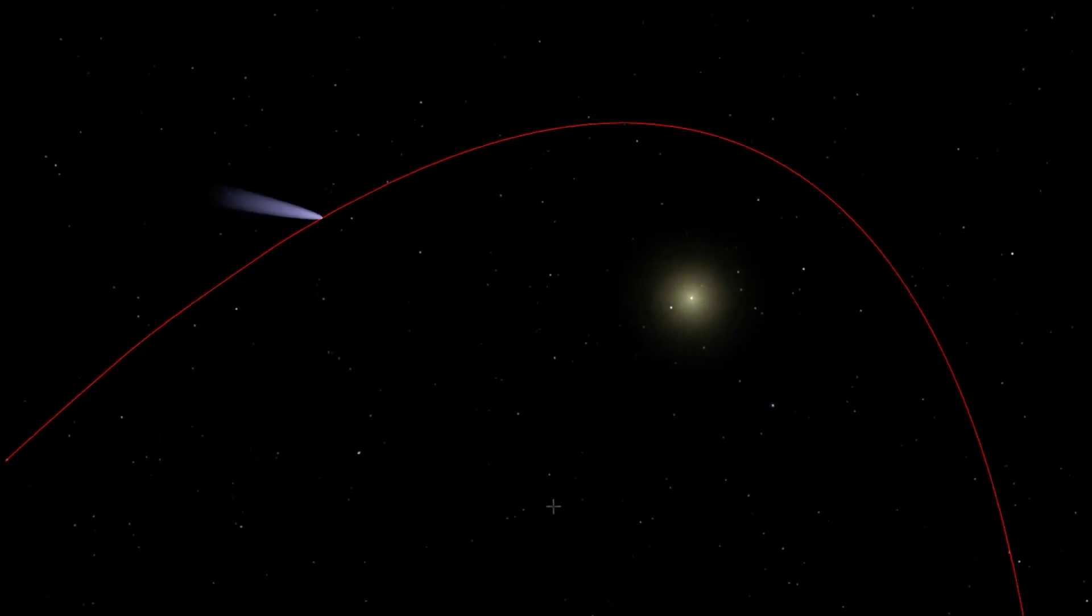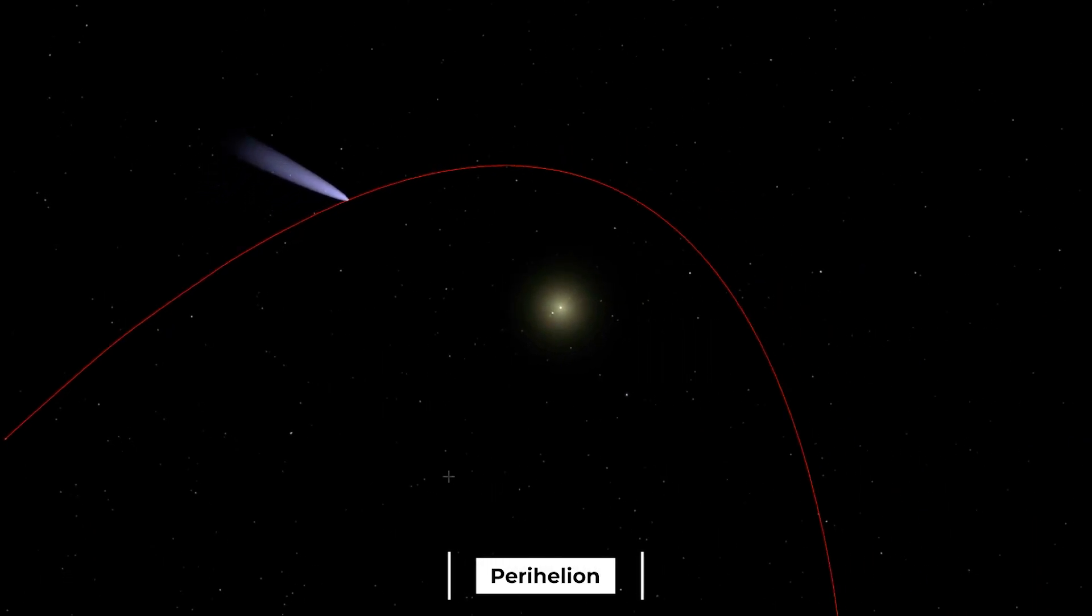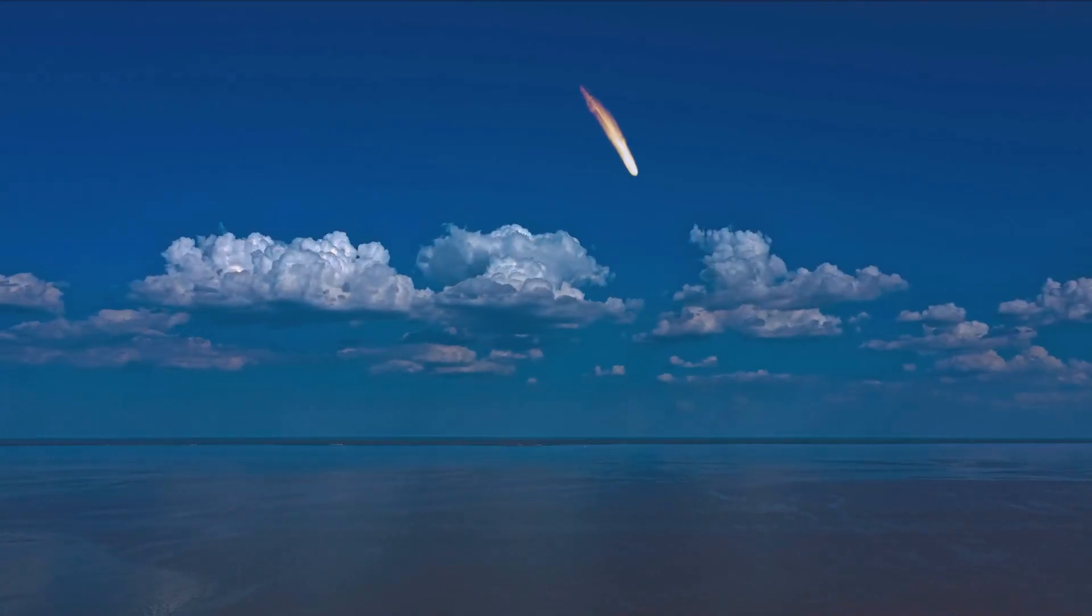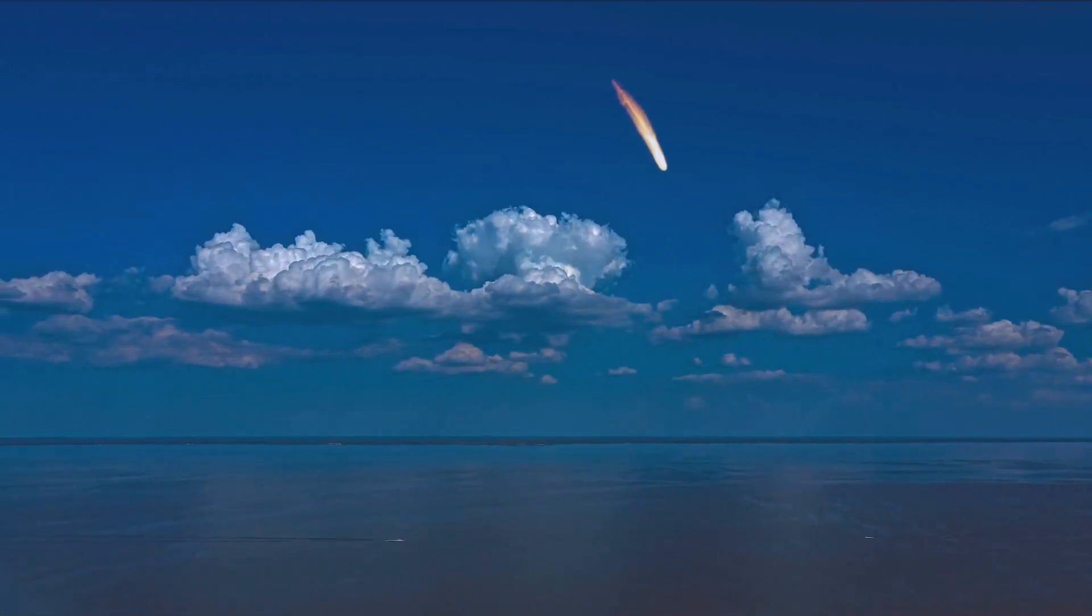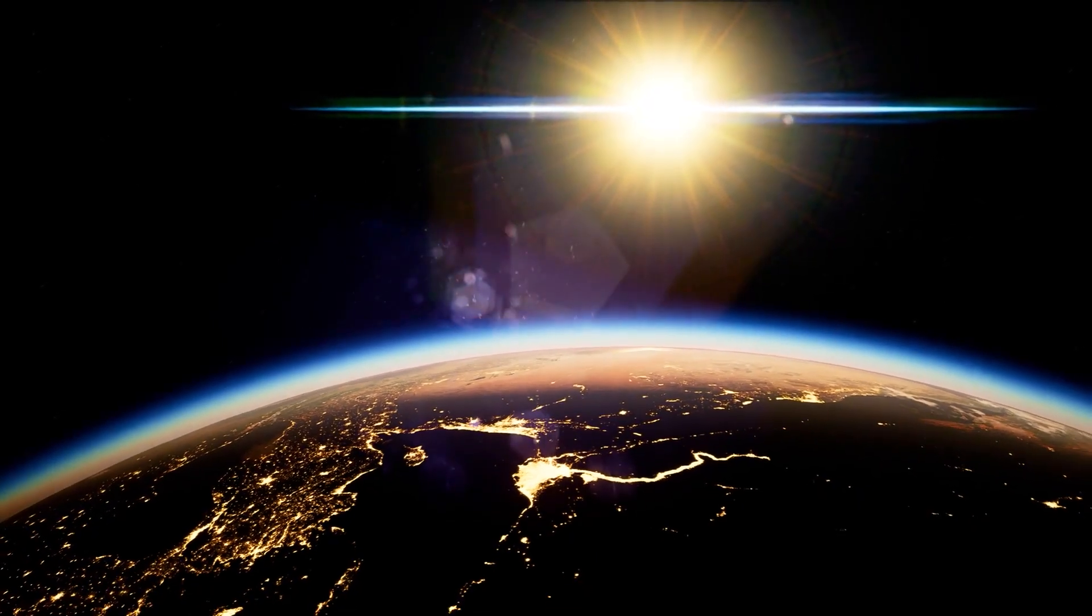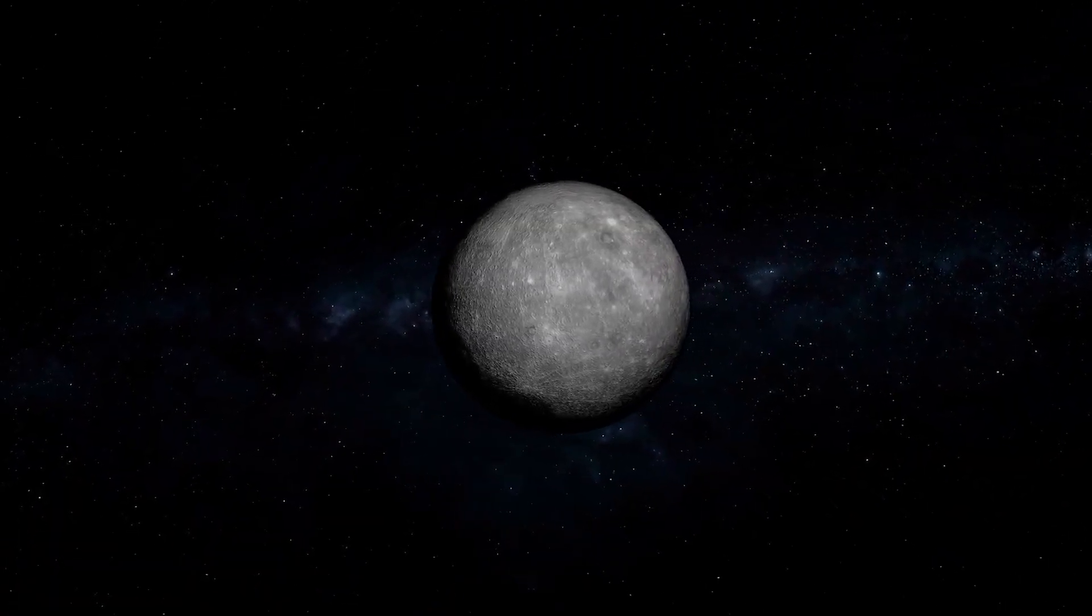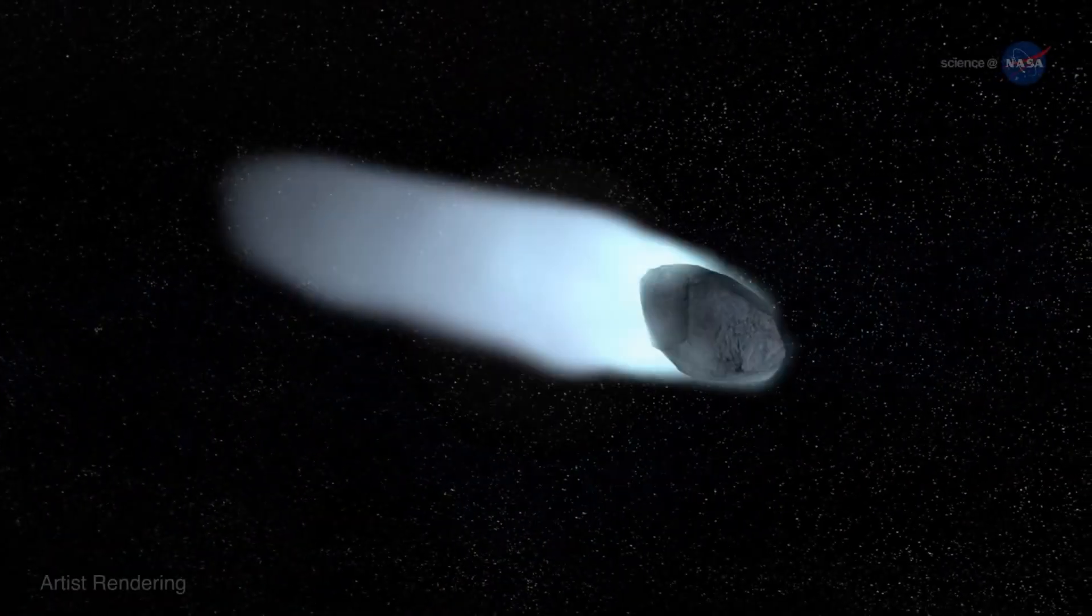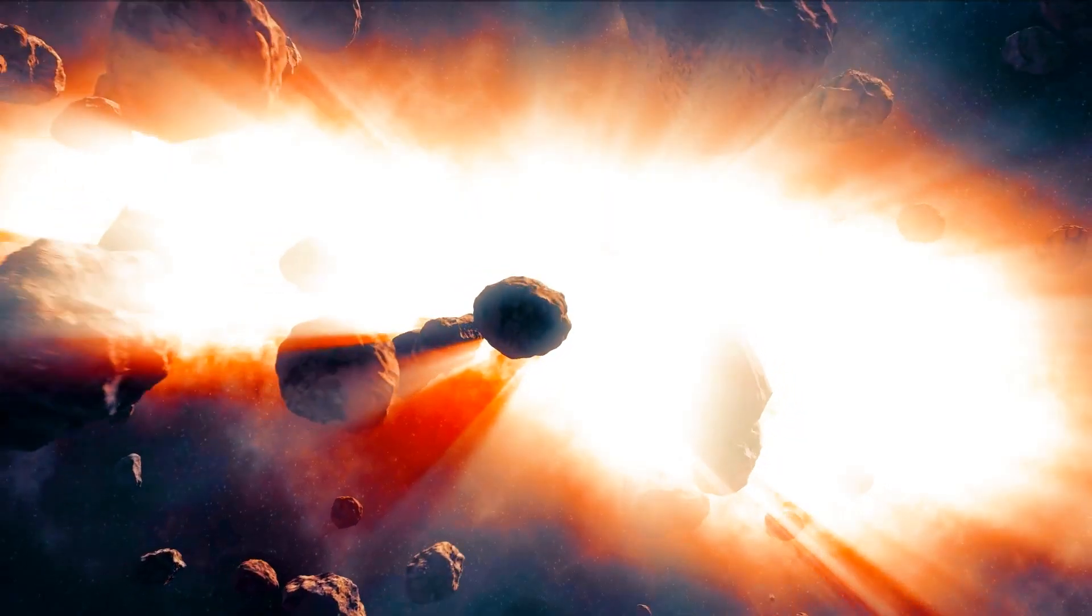On September 17, the comet should reach perihelion. At this time, it will be 0.22 AU from the Sun, or slightly over a fifth of the distance between Earth and the Sun. This will put it directly inside Mercury's orbit, which may be too near for the comet to survive the heat of the Sun.